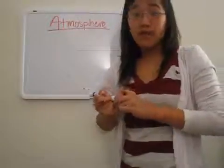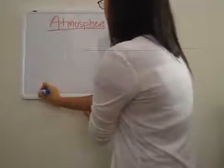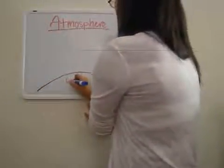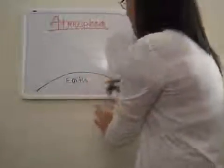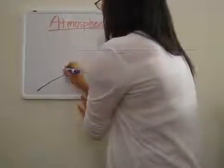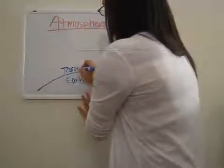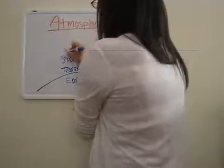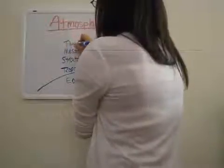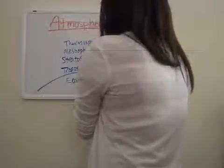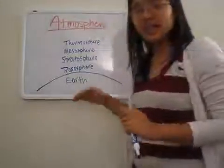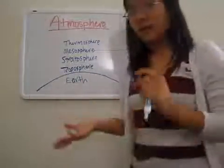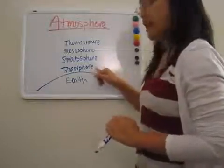There are four layers of the atmosphere. If we have Earth here, the lowest layer is called the troposphere, then we have the stratosphere, then the mesosphere, and then the highest is the thermosphere. The difference is just in altitude, and you have the ever-famous ozone, which only occurs in the stratosphere and the troposphere.